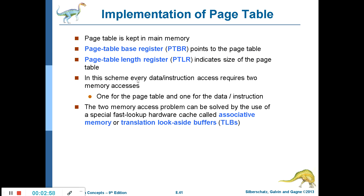How to implement a page table? The page table is also kept in the main memory. As the memory size increases, the page table size also increases. For example, if you have only 2 GB RAM, the page table size will be less; if you have 8 GB RAM, the page table size will also increase, because you divide the physical memory into equal-size blocks called frames. Earlier the frame size was 512 bytes; now it has gone up to 4 MB.